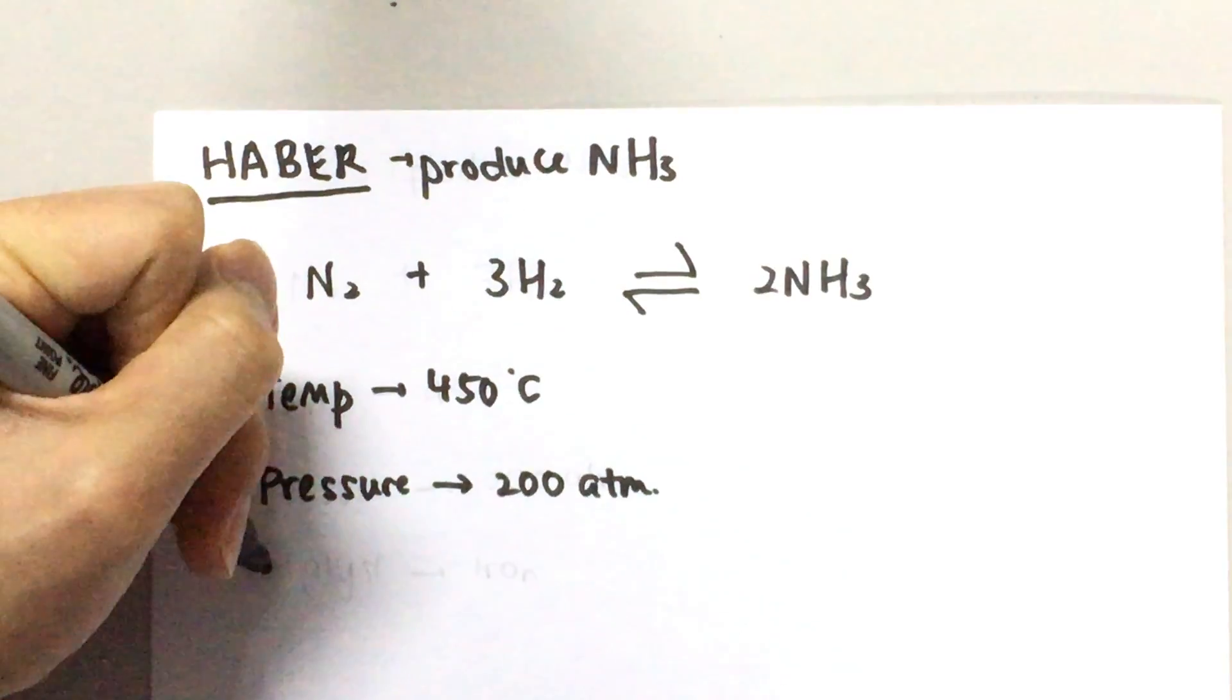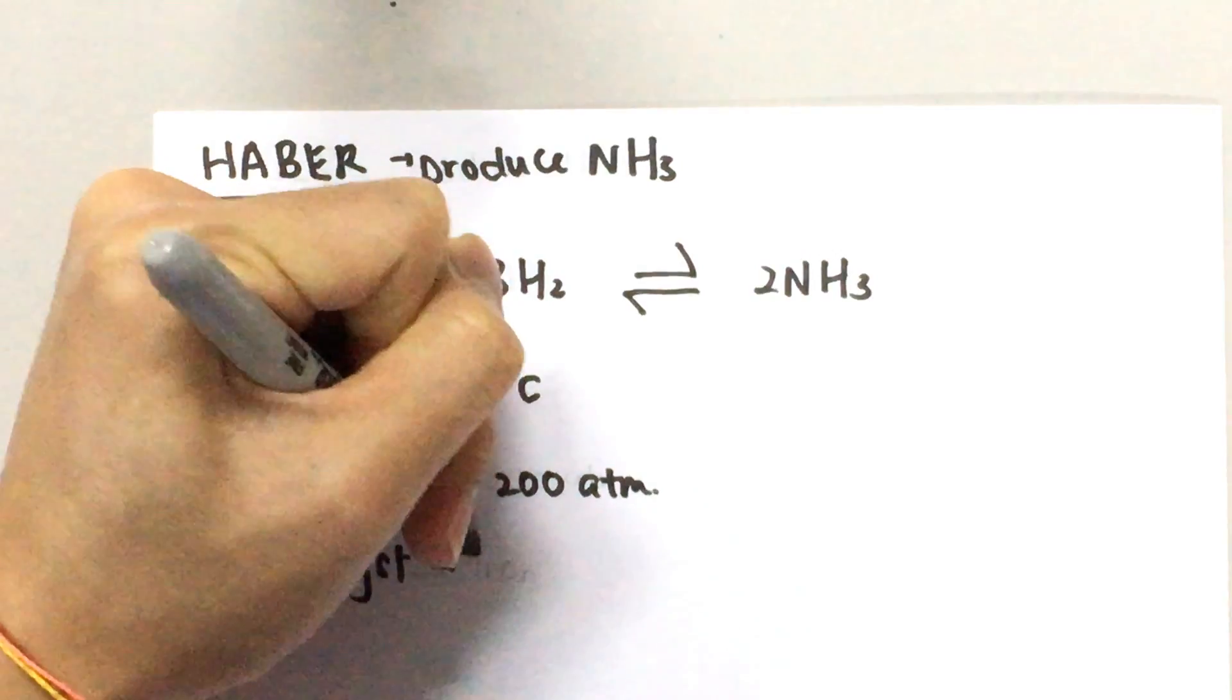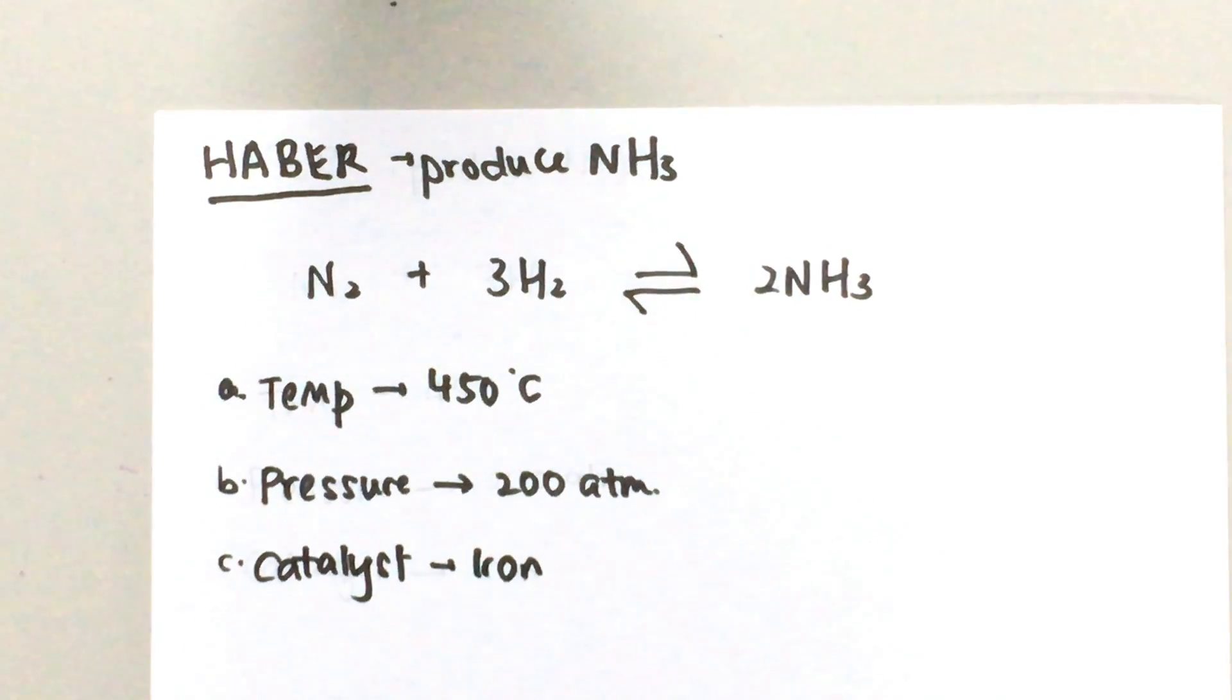And last but not least we have the catalyst here. We're going to use iron as a catalyst. The catalyst doesn't affect the yield or anything else. It only affects how quickly the equilibrium is being achieved.